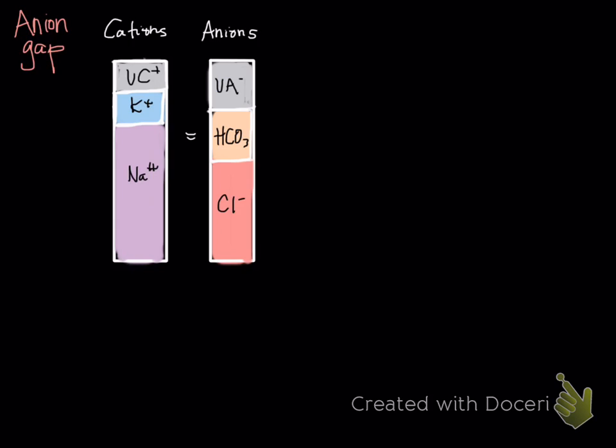We also have what are called unmeasured anions, and this is kind of the whole key. This is our anion gap, and you can see that our unmeasured anions are actually greater than our unmeasured cations, and this has some implications within the body.